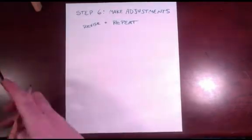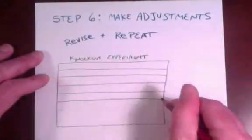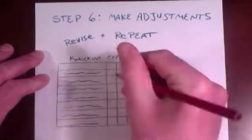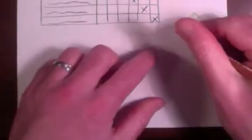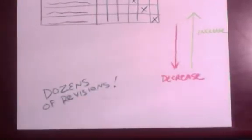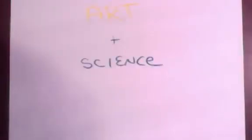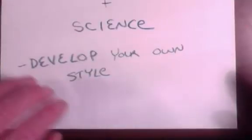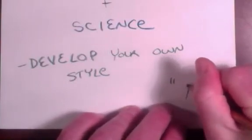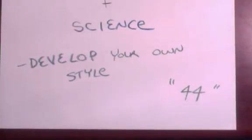Finally, step six, revise the formula and repeat. After you've tested the product and determined where it doesn't quite measure up, you'll need to make adjustments to see if it can be improved. I've found that knockout experiments are the most helpful way to figure out the effect that every ingredient has on the final formula. Once you know what the ingredients do, you'll know which ones to increase or decrease to improve your formula. After a dozen or so revisions, you should have a formula that meets your needs. Cosmetic formulating is as much an art as it is a science. As you gain more experience, you'll find ingredients that you like to work with and others you like to avoid. You'll develop your own style and ideally make products and formulas that are genuinely unique to you. In fact, I always like to add a signature in my formulas by using some ingredient at a percent that includes the number 44. It didn't usually have much effect on the formula, but it did make me feel like the formula was my own creation. And it was.